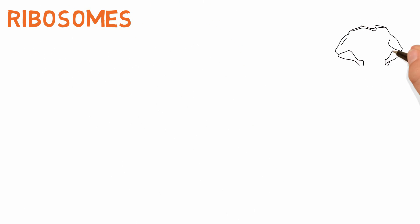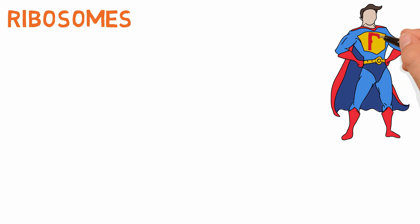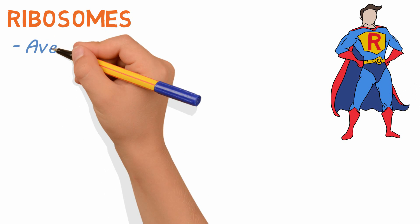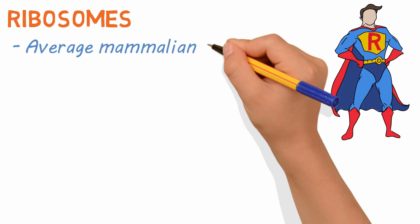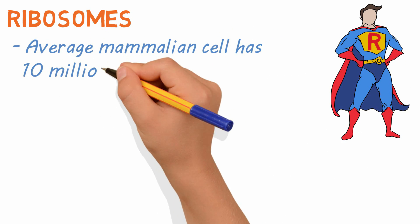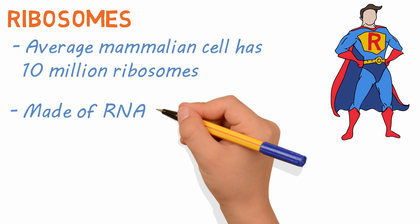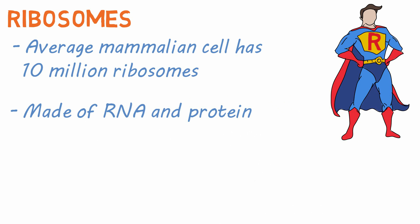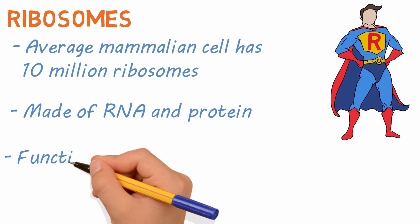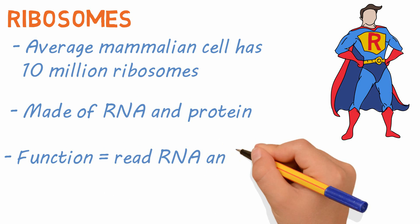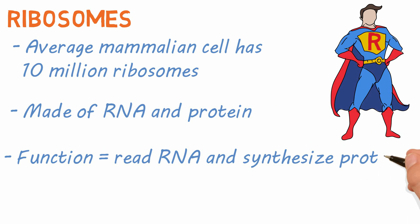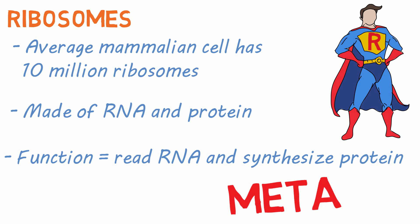Ribosomes are an underrated hero of the cell, and the average mammalian cell has about 10 million ribosomes. They are made of RNA and protein, and their function in the cell is to read RNA and synthesize protein. Very meta!